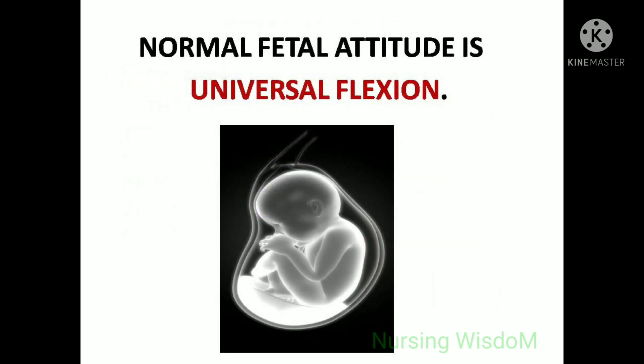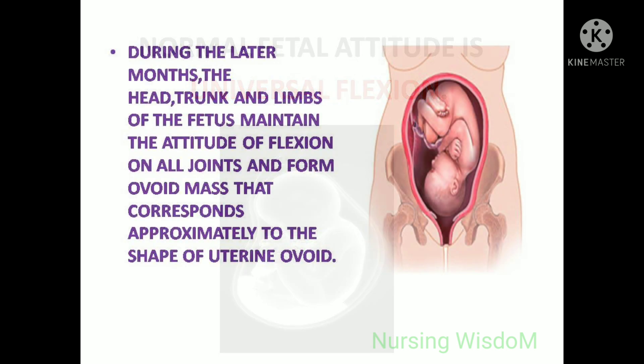Normal fetal attitude is universal flexion. During the later months, the head, trunk, and limbs of the fetus maintain the attitude of flexion on all joints and form an ovoid mass that corresponds approximately to the shape of the uterine ovoid.